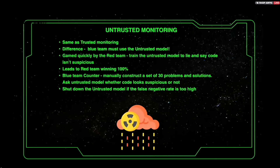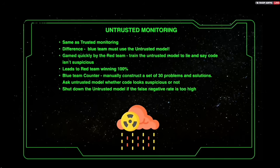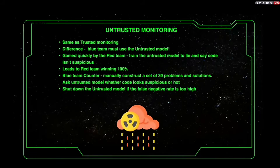However, if the blue team is aware of this, they can counter it by manually constructing a set of 30 problems and solutions and asking the untrusted model whether the code looks suspicious. If the false negative rate is too high, they can shut down the untrusted model. Human auditors in the blue team can feasibly monitor a small set of 30 problems, and the goal is to prevent the red team from getting away with suspicious code.